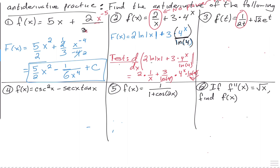What you want to do instead is look at this as being 1/2 times 1 over 2t, and then it makes sense exactly what to do. Because 1/2 is a constant, so when you get the anti-derivative, you have 1/2 times the anti-derivative of 1 over 2t, which is ln of 2t. And then plus root 2 — that's a constant, so I leave it alone — and then the anti-derivative of e to the t is e to the t. Plus C.